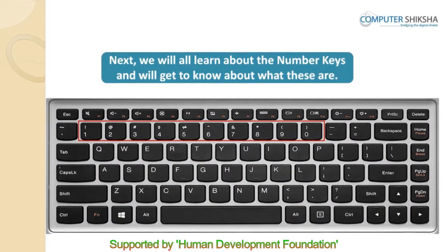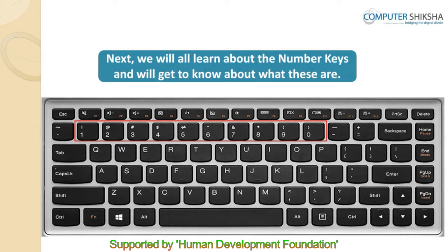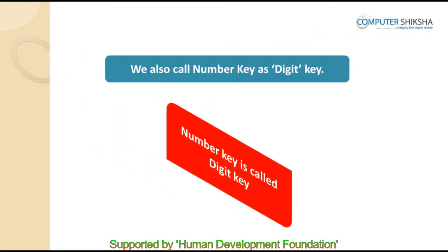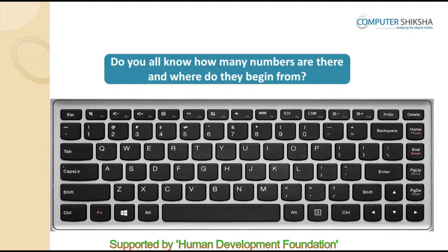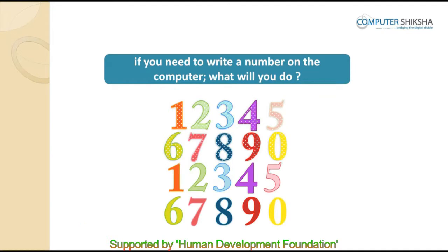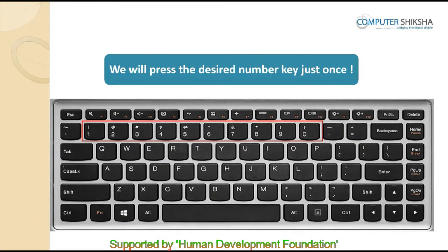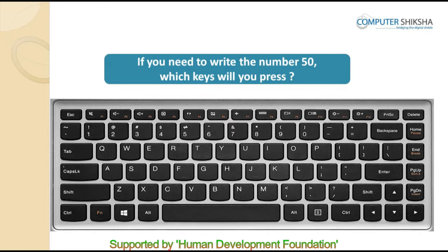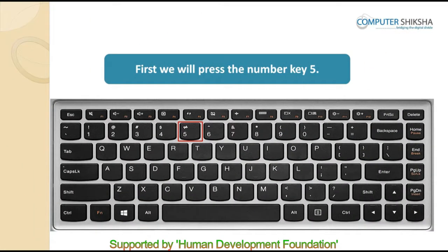We will all learn about the number keys, also called digit keys. On the computer keyboard, the numbers begin from 1 and end at 0. If you need to write a number on the computer, you will press the desired number key just once. For example, if you need to write the number 50, you will first press the number key 5 and then the number key 0.